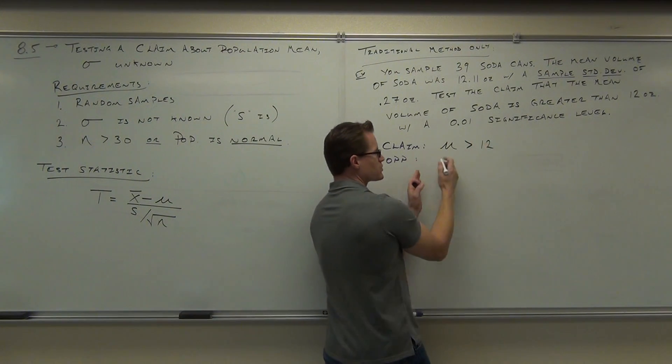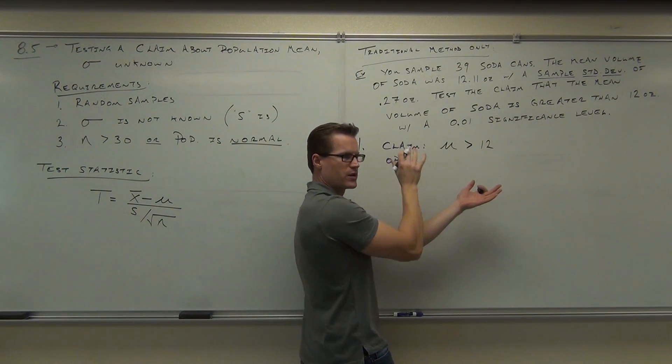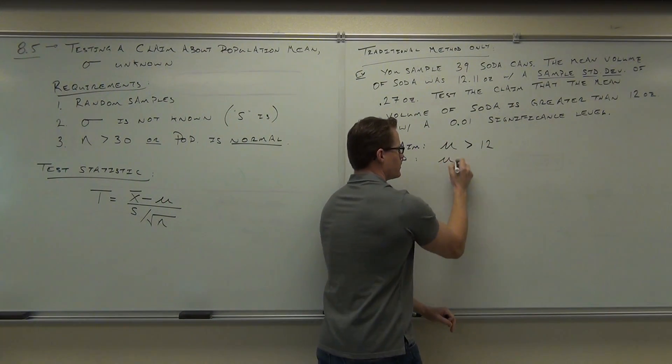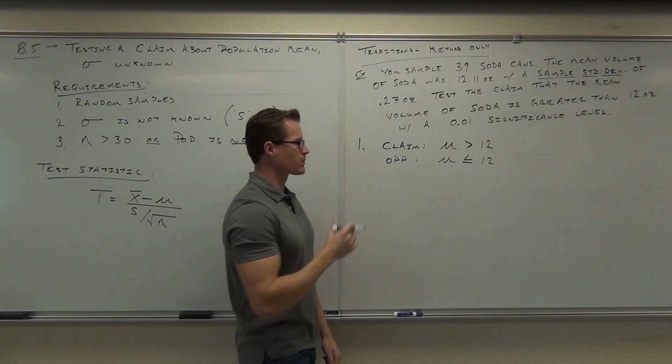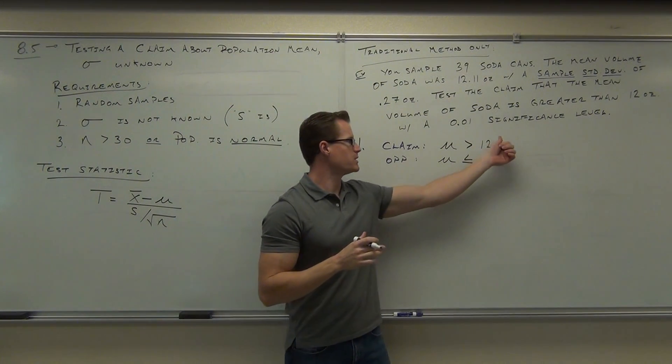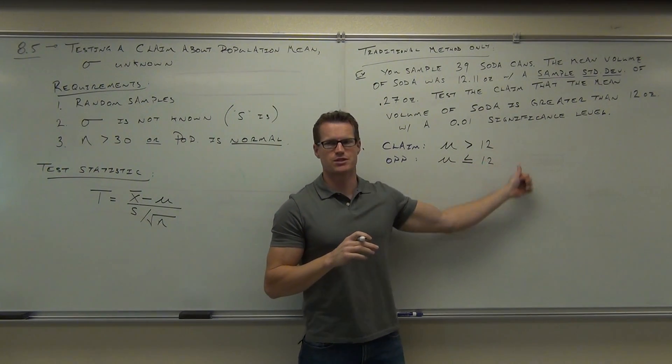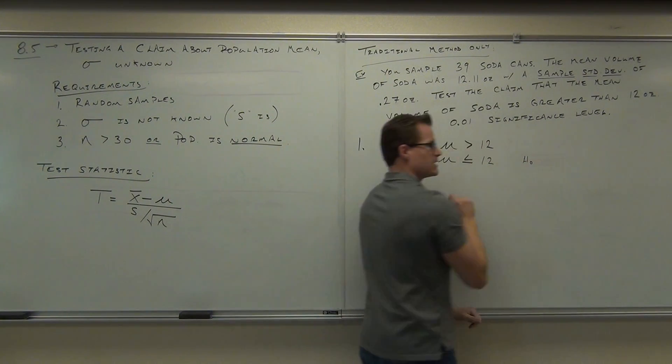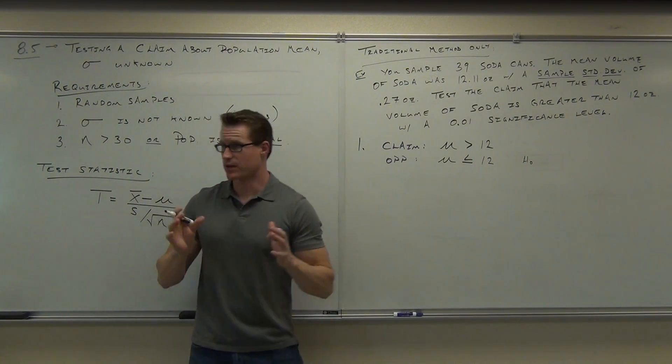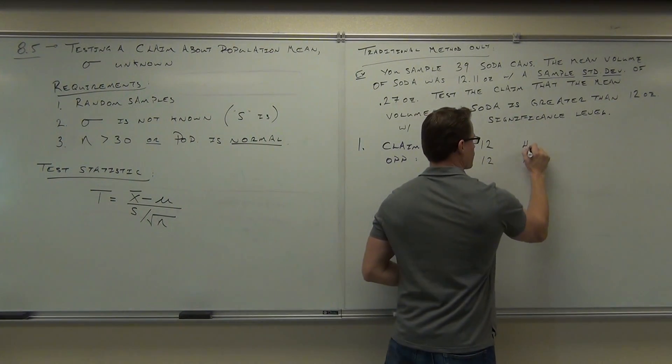Of course, the opposite is just really flipping that sign around and putting the equal somewhere. So we have mu 12 less than or equal to as the opposite statement and greater than. Which one of these things is going to be our H sub 0, the top or the bottom? Whatever that equality is, that's our H sub 0. H sub 1 would therefore be our claim.